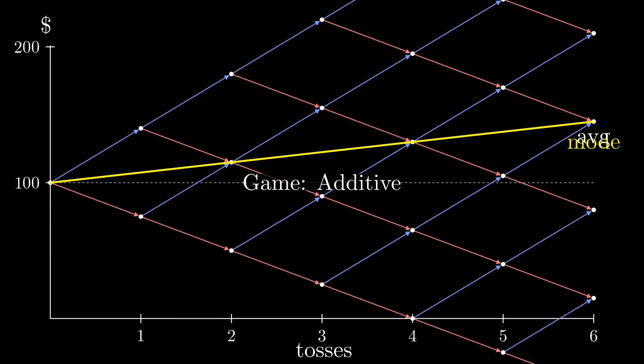This is an additive way to play the game. Note that we're not in logarithmic view. We simply changed our strategy. Now heads always gives $40 and tails always subtracts $25, no matter where we are. Our mode now slopes upward and equals the average. That's great!